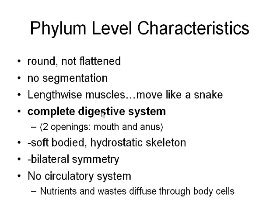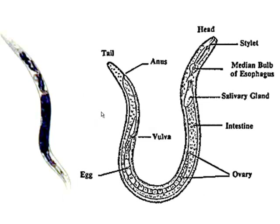Here's a quick picture of the structure. Here's the head, here's the anus — food comes in here, goes out there. We have some salivary glands which help to break down food, and it has an intestine, which is different from the gastrovascular cavity. There are ovaries for reproduction and eggs as well. You can jot that one down.